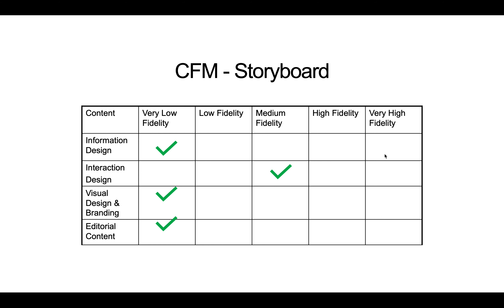Let's think about what a storyboard's content fidelity matrix looks like. For information design, we're not really showing how things are organized in the system — we didn't show what the menus were for the Nintendo Wii. We're not showing visual design, branding, or any editorial content. But for interaction design, we're showing the guy is in front of the TV with a remote and what he's able to do, showing a little bit of detail about interaction with the system. That's really typically what storyboards are about.